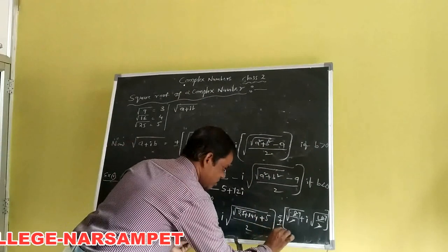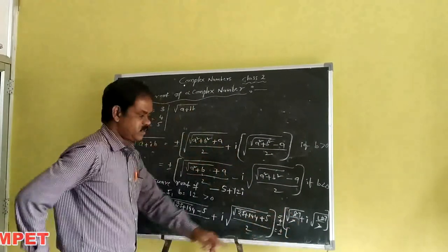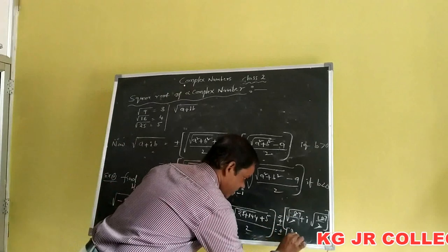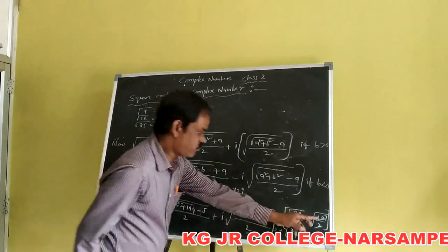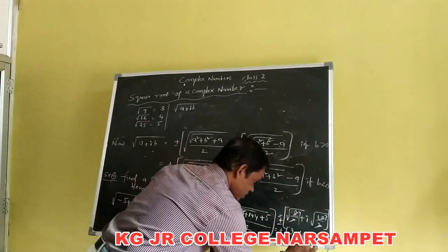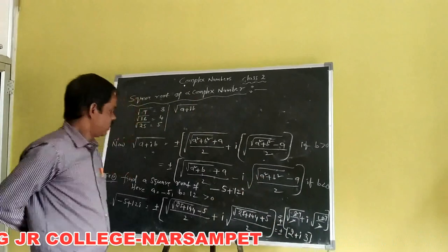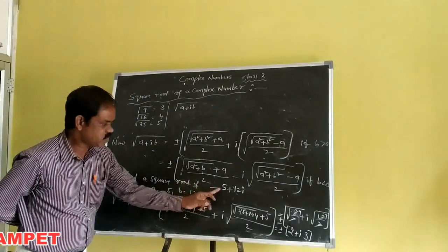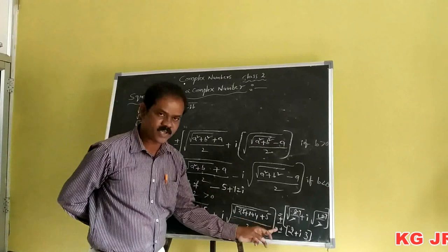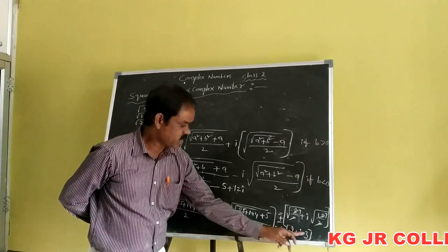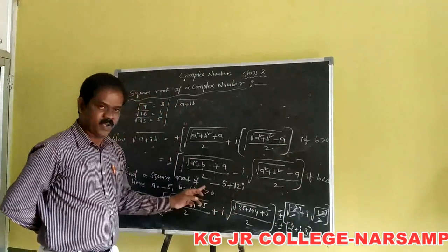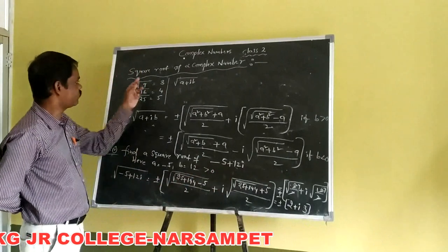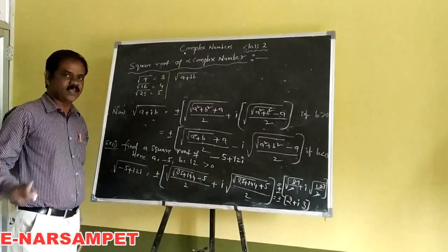This equals plus or minus of: the square root of 4 equals 2, and plus i into the square root of 9 equals 3. Therefore the square root of minus 5 plus 12i equals plus or minus (2 plus 3i). This is the concept of the square root of a complex number.